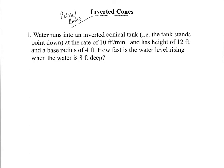Water runs into an inverted conical tank — in other words, a tank that stands pointed down — at a rate of 10 cubic feet per minute. Let's highlight some important stuff: this is the rate we are given, 10 cubic feet per minute, so dV/dt = 10 cubic feet per minute.